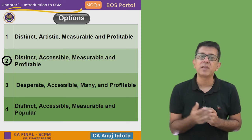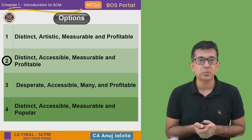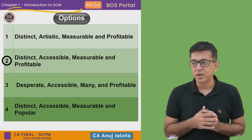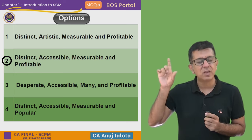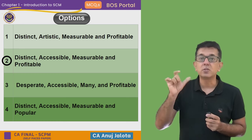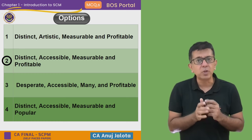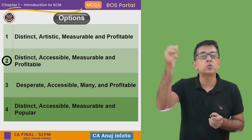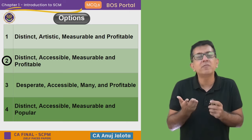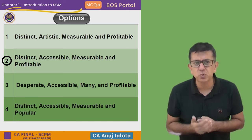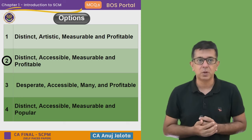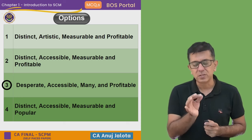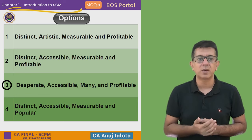Option two has distinct, accessible, measurable, and profitable. The three words are the same, but 'accessible' is very important. For example, we are selling products in India and we think there is demand in a small country in Africa, but we don't have access or resources to go there and sell — then it will not remain a market segment for us. Option three contains the word 'desperate,' which is useless, so option three is eliminated.